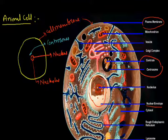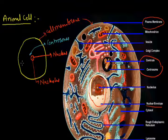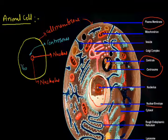Another structure is known as the Golgi body, and it is also present in the animal cell.